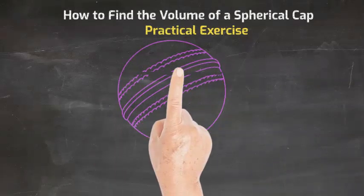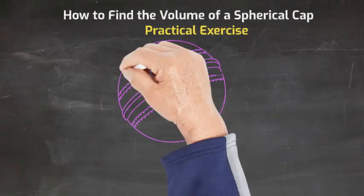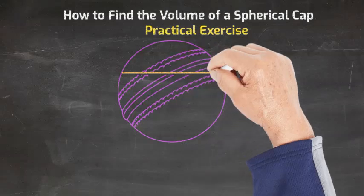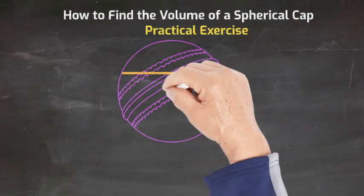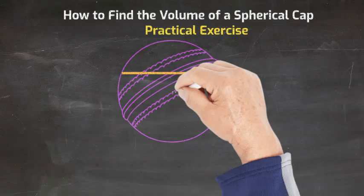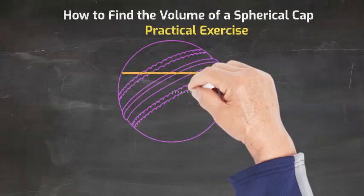You need to use the equation volume equals the product of pi times height squared divided by 3 multiplied by 3 times the radius minus the height.